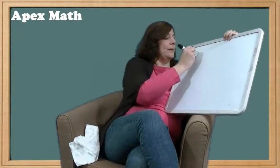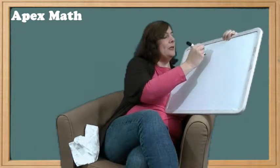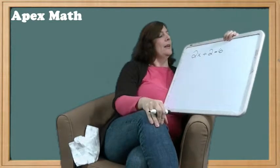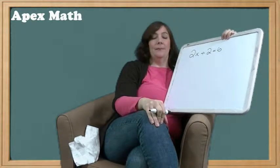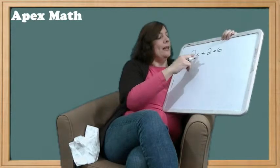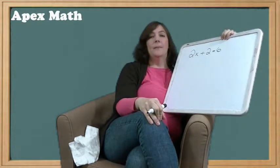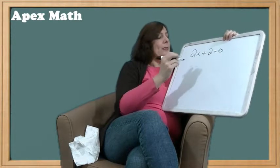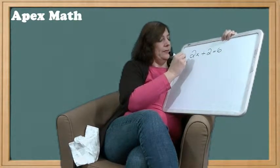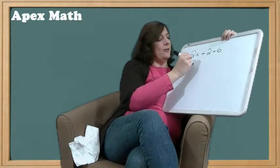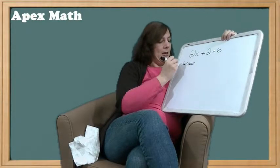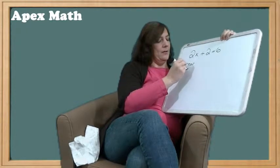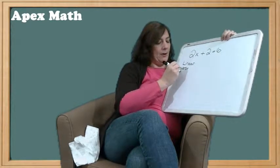Our first function is going to be 2x plus 2 equals 6. What type of function is this? Well, it has an x to the first power, so that should tell you that is a linear function. And how do we solve linear functions? Linear functions are solved by using inverse operations and isolating the variable.